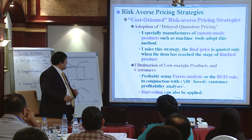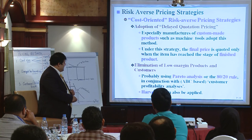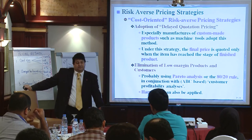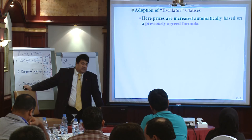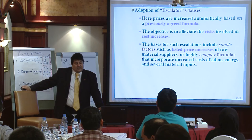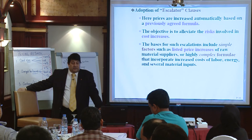Another cost-oriented strategy is the elimination of low-margin products and customers, probably using Pareto analysis or the 80-20 rule in conjunction with ABC and customer profitability analysis — harvesting can be applied to get rid of complexity from low-margin products. Another approach is the adoption of escalator clauses, where prices are increased automatically based on a previously agreed formula. The objective is to alleviate risk involving cost increases. The basis may be simple factors such as raw material price increases, or a complex formula incorporating labor, energy, and several material inputs.